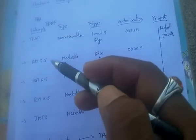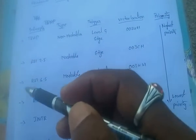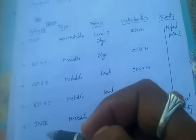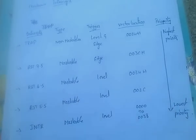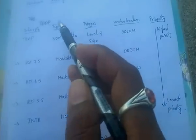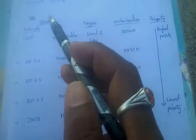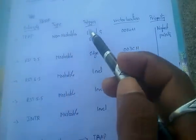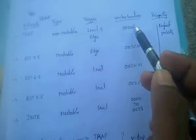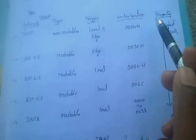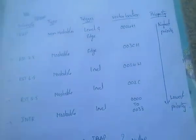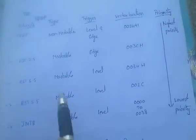For each hardware interrupt, we note its type (maskable or non-maskable), the trigger circuit used, the vector location, and the priority.